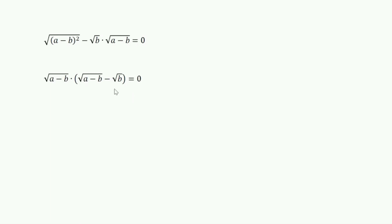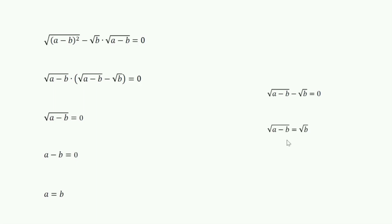Here we have two conditions. One is: square root of (a minus b) equals 0, or square root of (a minus b) minus square root of b equals 0. From the first case, a minus b equals 0, or a equals b. From the second case, square root of (a minus b) equals square root of b, or a minus b equals b, giving us a equals 2b.